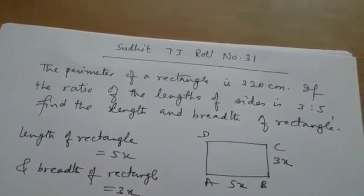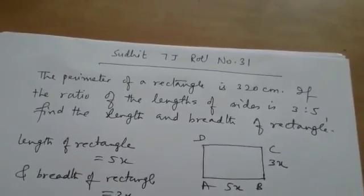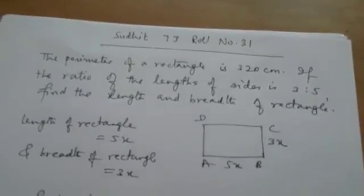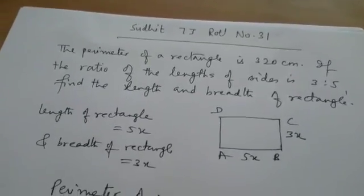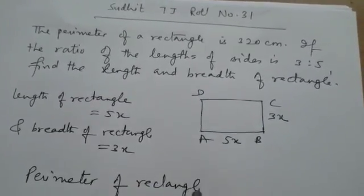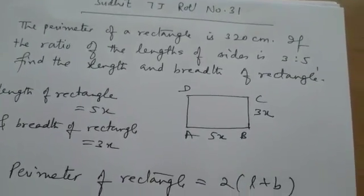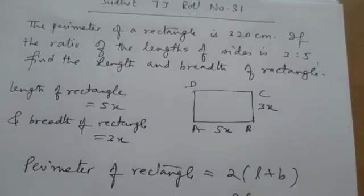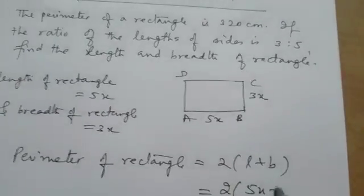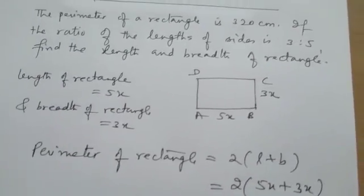Then, we will make the equation. Perimeter. What is the formula of perimeter? 2 into length plus breadth. Right. So, perimeter of rectangle is 2 into L plus B is equal to 5x plus 3x.